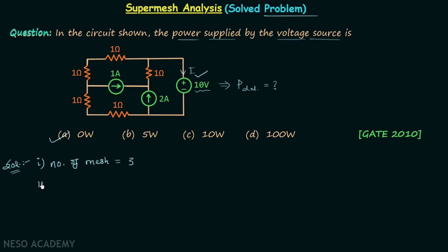In step two we assign the mesh currents. I1 is the mesh current in mesh number one flowing in the clockwise direction. I2 is the current in mesh number two flowing in the clockwise direction, and I3 is the current in mesh number three flowing in the clockwise direction. We are done with step two.